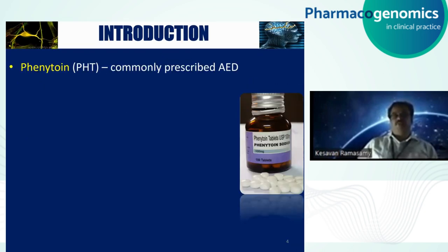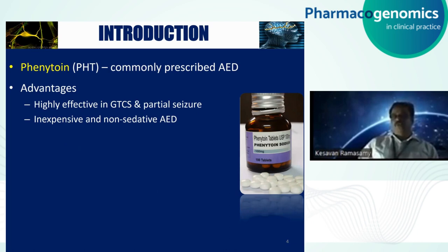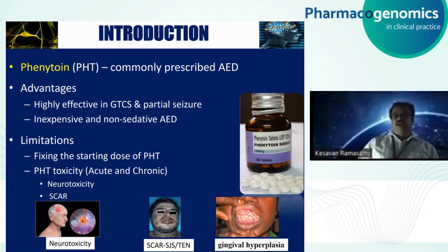The drug chosen for this session is phenytoin. Despite newer drugs being available, phenytoin is a commonly prescribed anti-epileptic drug. Its advantage is that it is highly effective, inexpensive, and non-selective. But this drug has limitations — fixing the starting dose of phenytoin is time-consuming and done by trial and error. Another limitation is its toxicity profile: it can cause acute and chronic toxicity, and especially neurotoxicity, which is commonly seen when the plasma concentration is high.